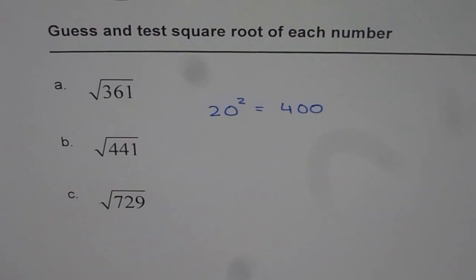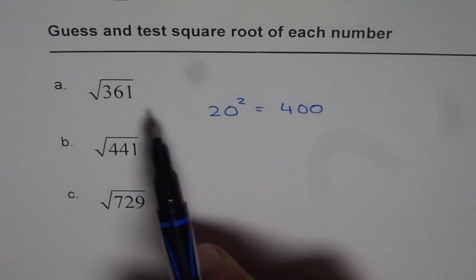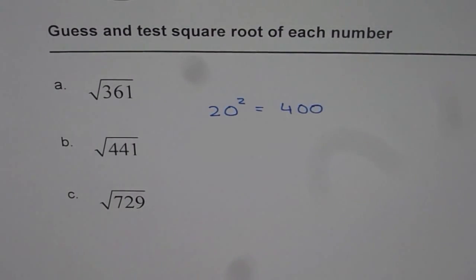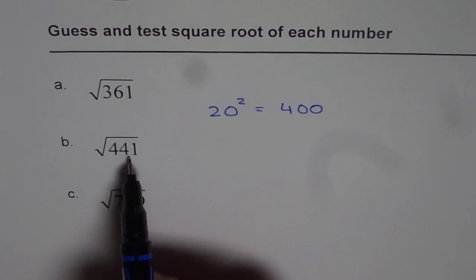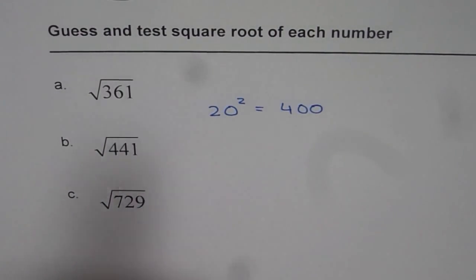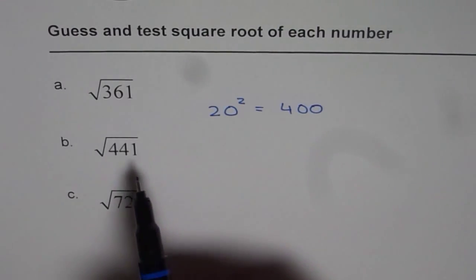The other one is square root of 441. Now 441 is 40 more and 361 is 40 less than 400. So that means the square root of 441 should be more than 20 and 361 should be less than 20. Less than 20 it could be 19, it could be 18. More than 20 means 21 or 22.